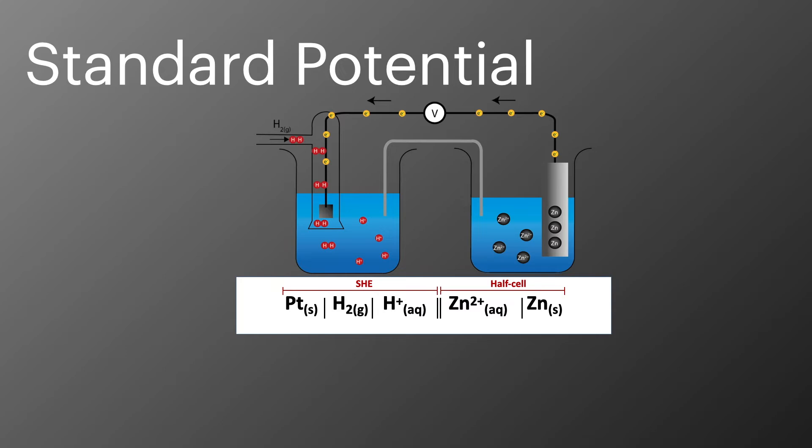So when it comes to measuring the electrode potential of a half cell, we combine it with a standard hydrogen electrode like shown here. The standard hydrogen electrode has an electrode potential of zero volts, and the zinc half cell has an electrode potential of minus 0.76 volts. This means that the zinc is more reactive than the hydrogen and is pushing electrons from the zinc atoms up into the hydrogen electrode.